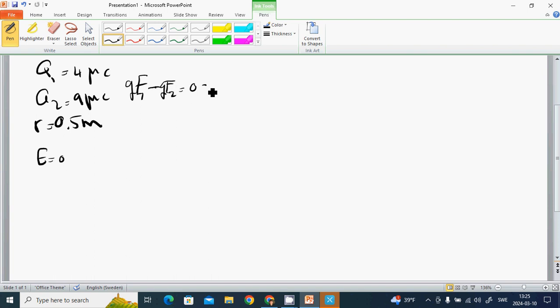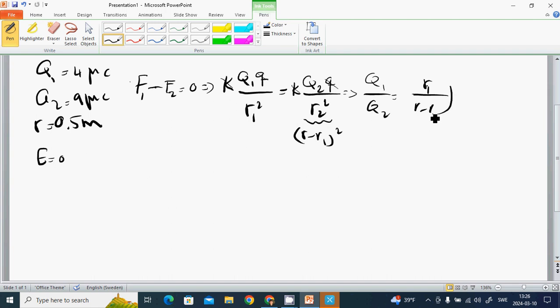We set k q1 q over r1 squared equals k q2 q over r2 squared. Since r2 equals r minus r1, we get q1 over q2 equals r1 squared over (r minus r1) squared. Solving for r1, we get r1 equals square root of q1 over q2 times r, divided by 1 plus square root of q1 over q2.